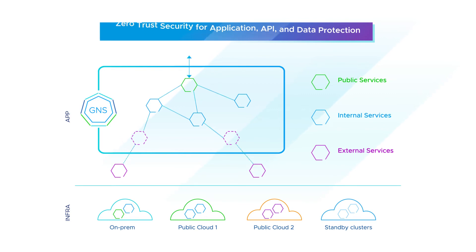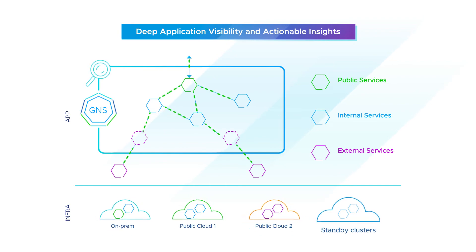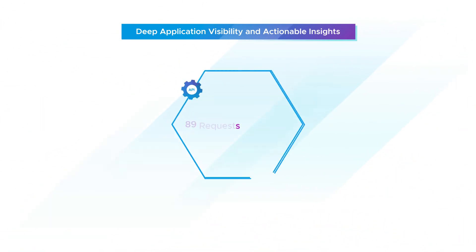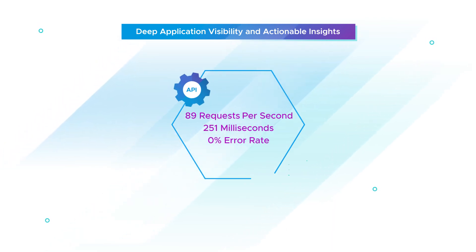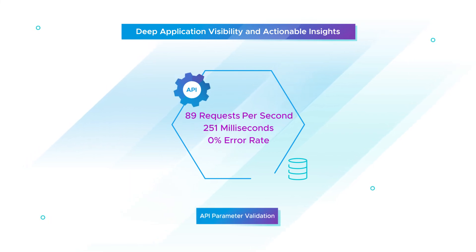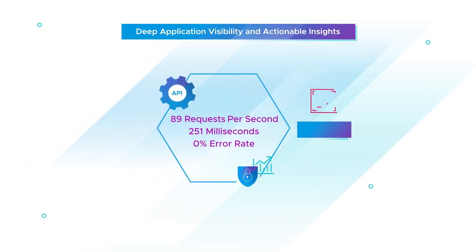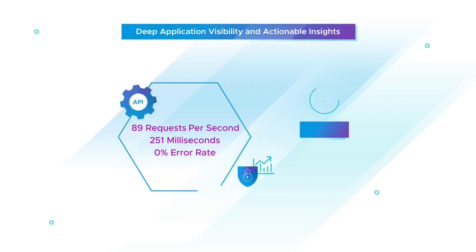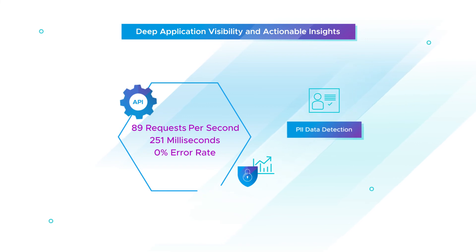Tanzu Service Mesh provides operations teams with rich troubleshooting tools, including multi-cloud topology maps and traffic flows, and performance and health metrics. Security teams gain insights from API baselining and drift detection, including API parameter validation and security analytics that address behavioral anomalies, unsanctioned usage, API threat detection, and PII data detection.